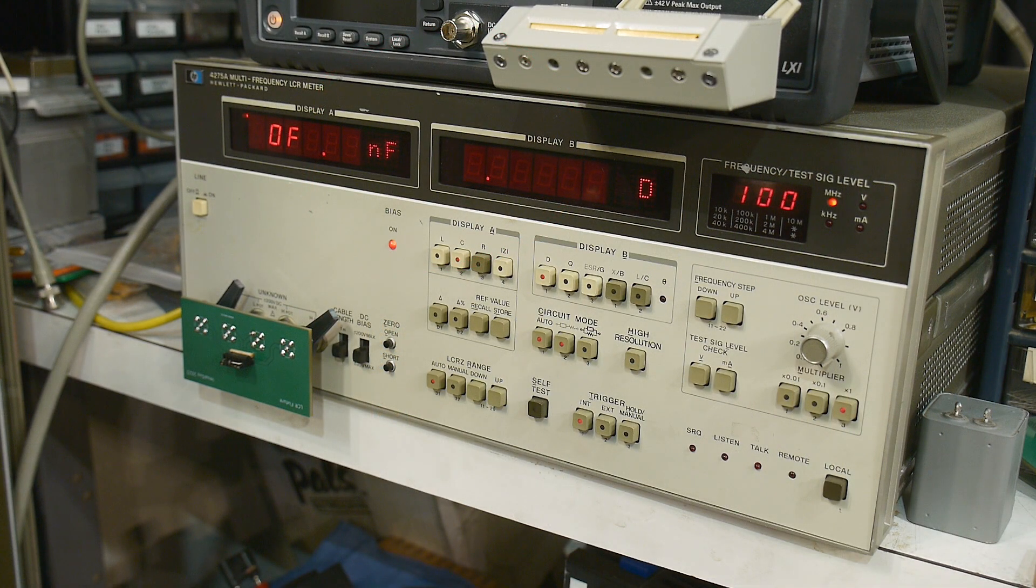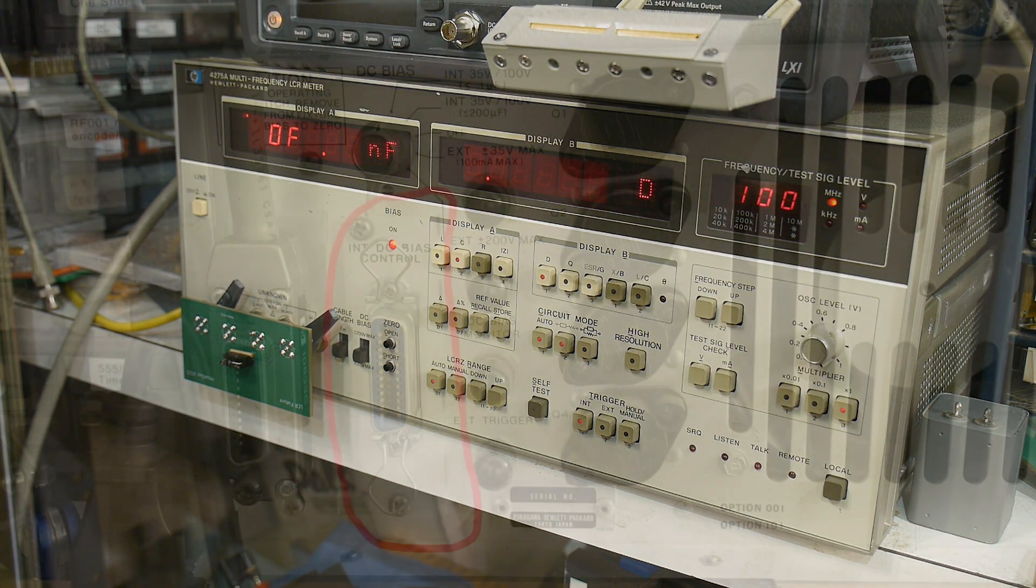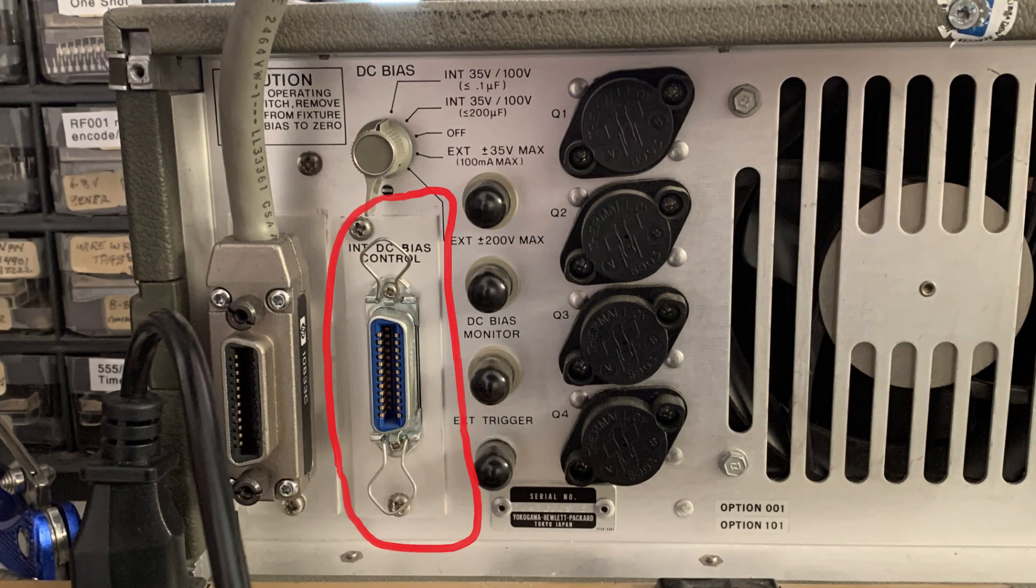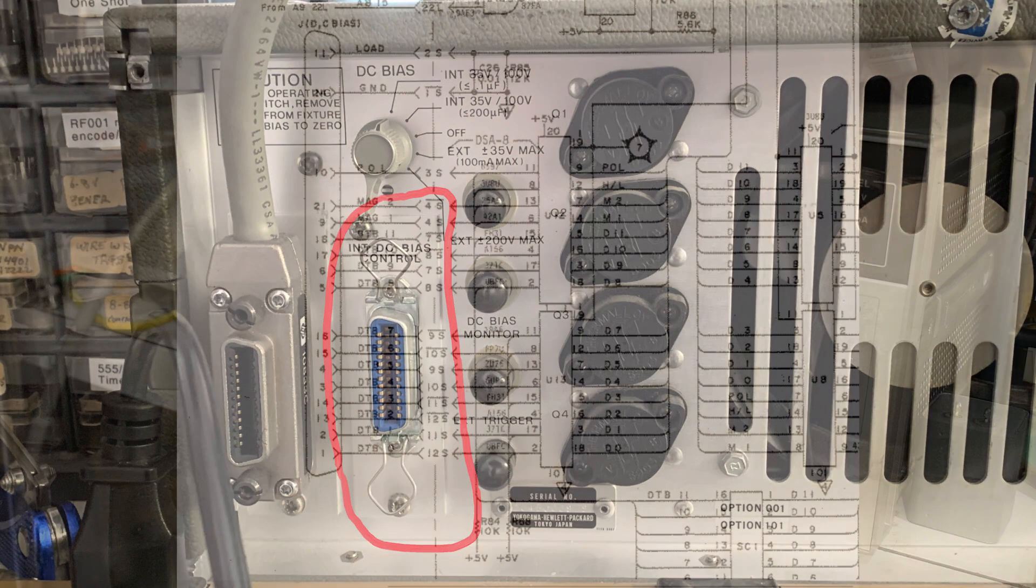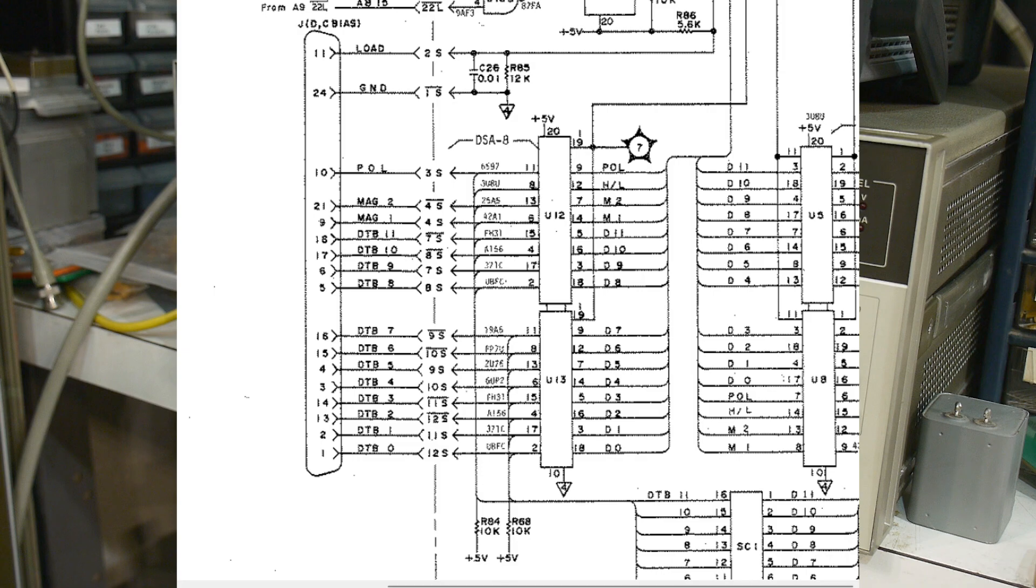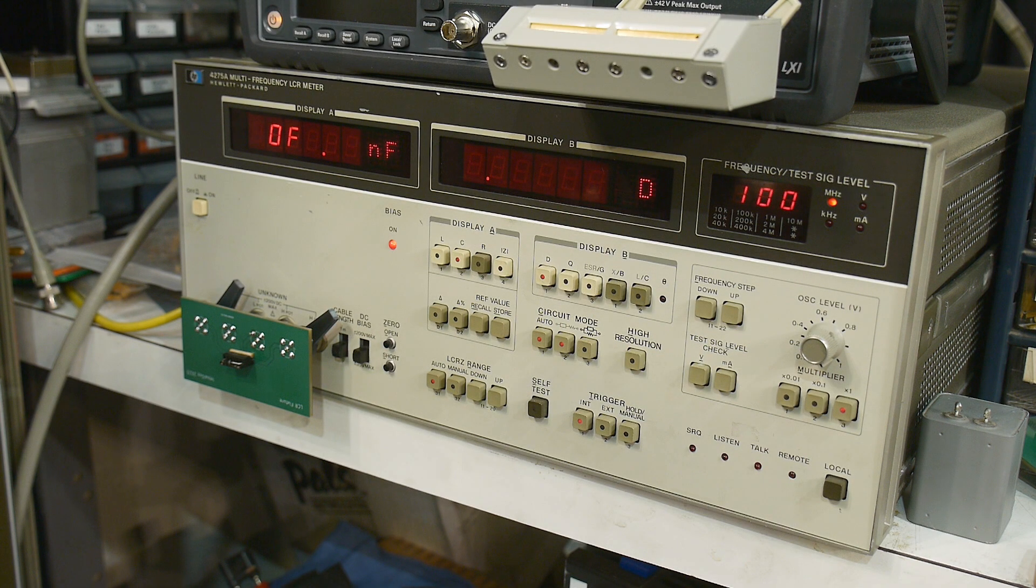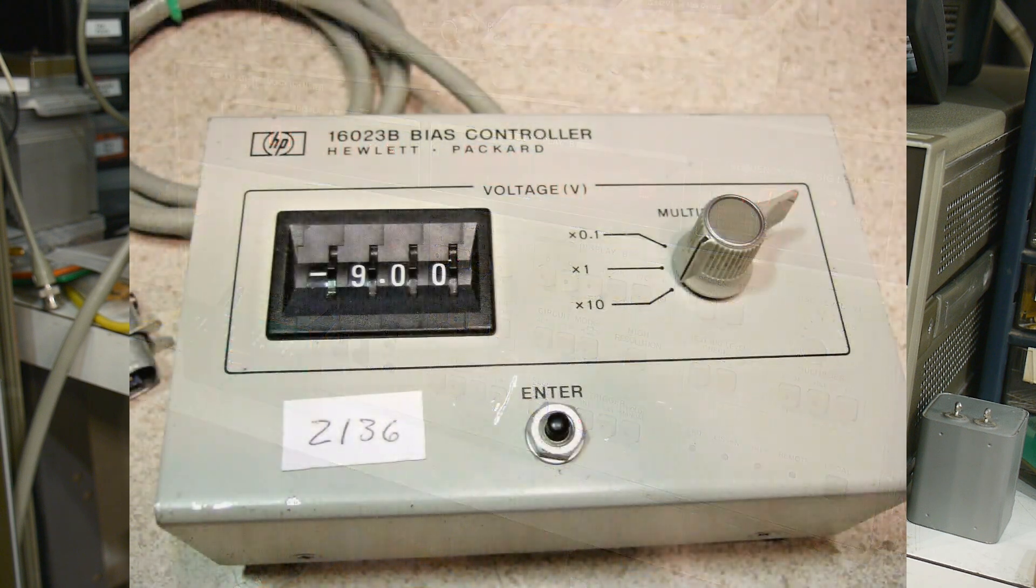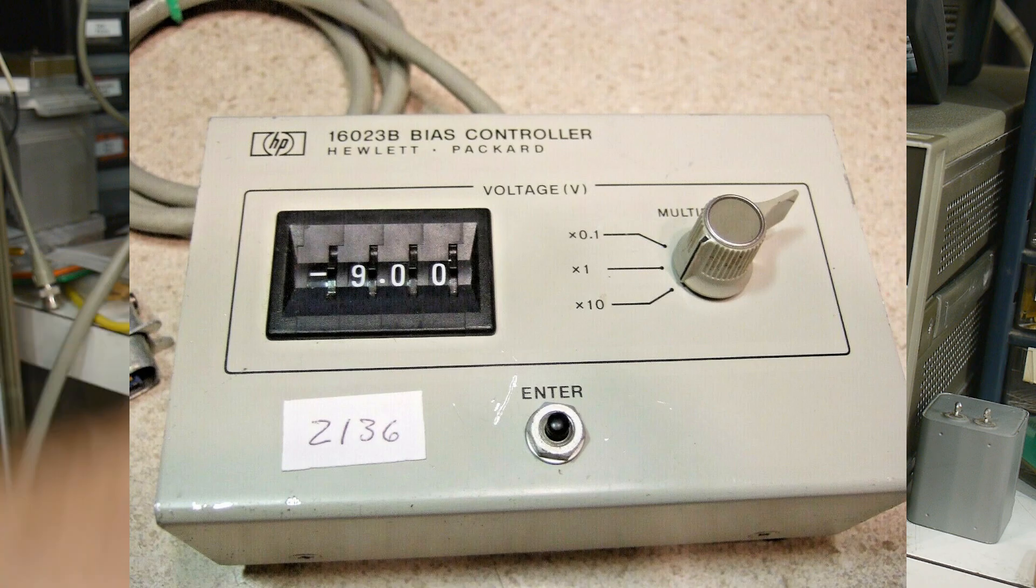And so then I looked into it. And there's a connector on the back that allows you to add a DC bias control, kind of a remote control. It's a funny box, and there are a few available, but they cost more than I paid for this.